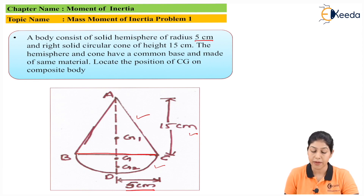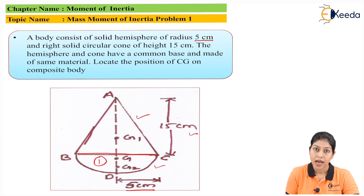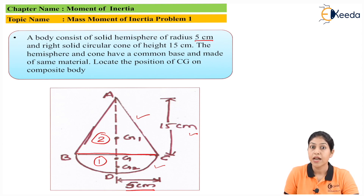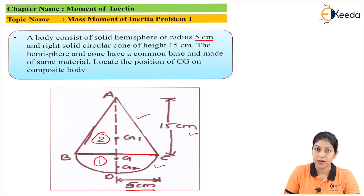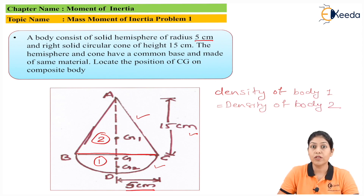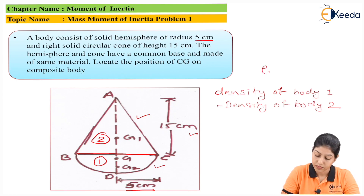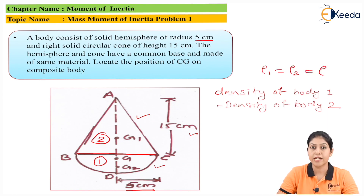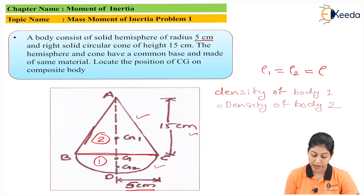Both solids are made of the same material. Considering the hemisphere as body one and the cone as body two, both have the same density — so rho one equals rho two equals rho. Since mass equals density into volume and density is common, we can use volume directly for each solid.